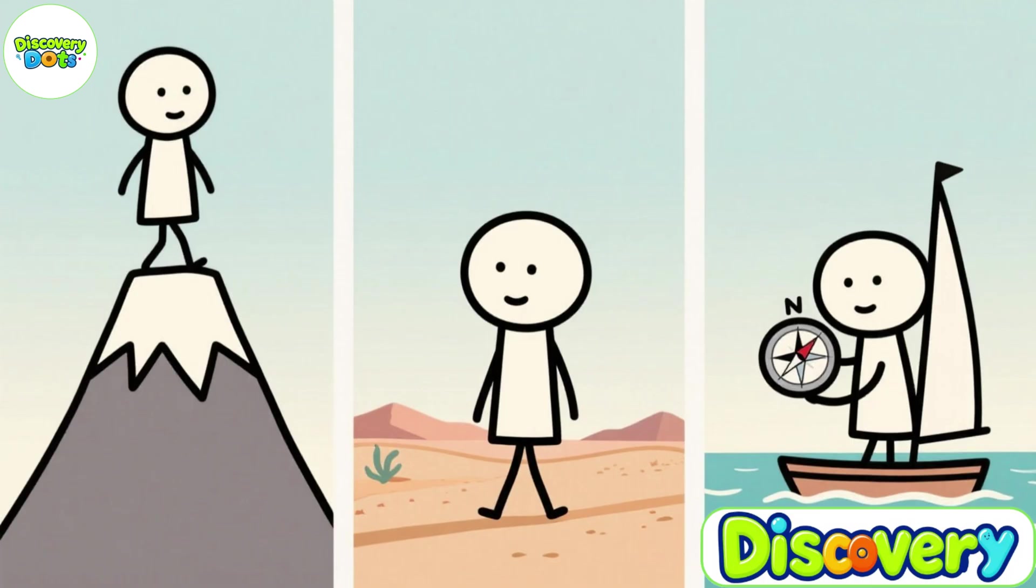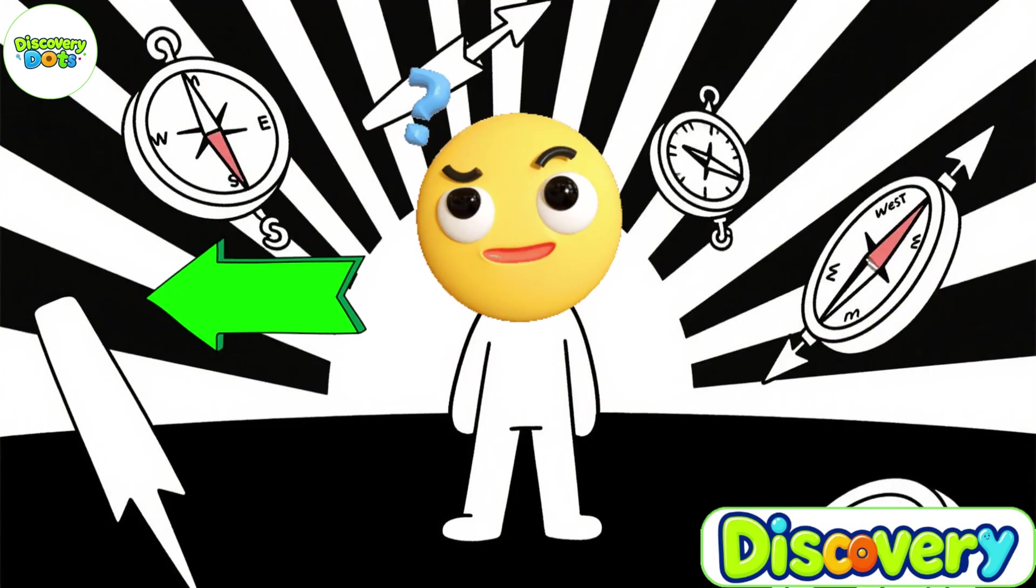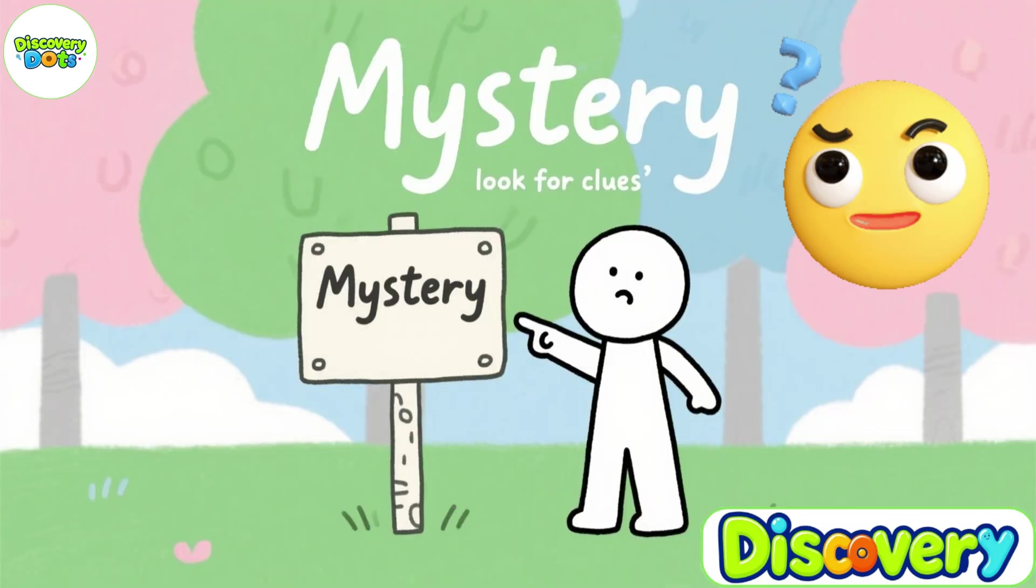The wonder here is this: no matter where you stand on Earth, on a high mountain, across the desert, or in the middle of the wide ocean, the compass needle always points in the same direction. But why is that? Why doesn't it point east, west, or spin randomly? This is the mystery we are about to uncover today.